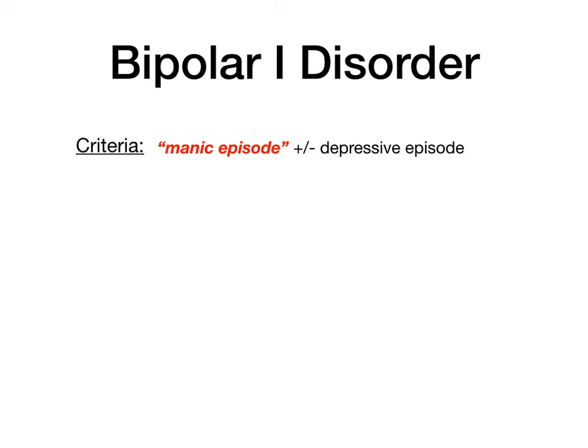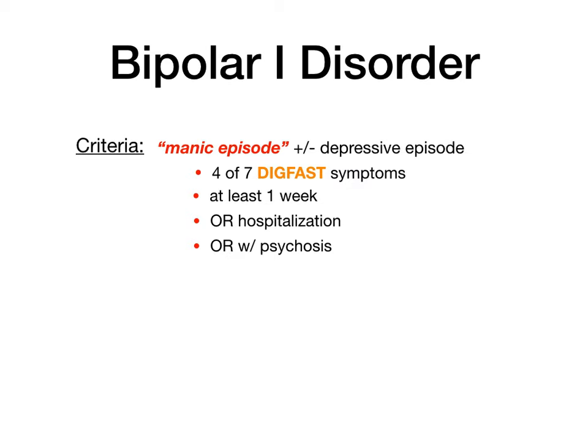A manic episode is four of seven DIG-FAST symptoms lasting for at least one week. Or — and this is very high yield for Step 2 — if the patient gets hospitalized to an acute inpatient psychiatric unit, or presents with psychotic features with a known history of a bipolar spectrum disorder, it automatically qualifies as a manic episode and bipolar 1 disorder. So: four of seven DIG-FAST symptoms for at least seven days equals a manic episode, which means bipolar 1.